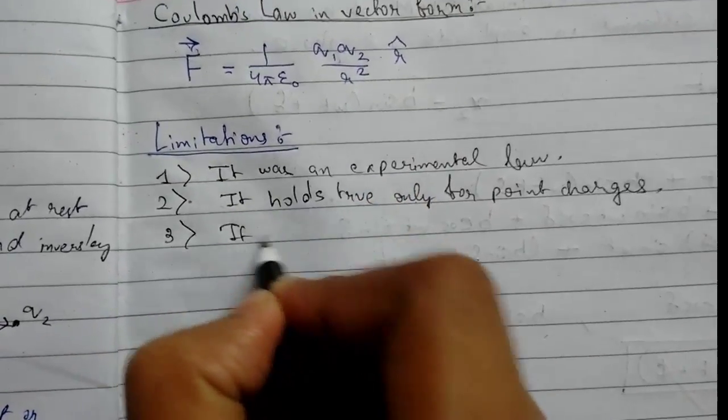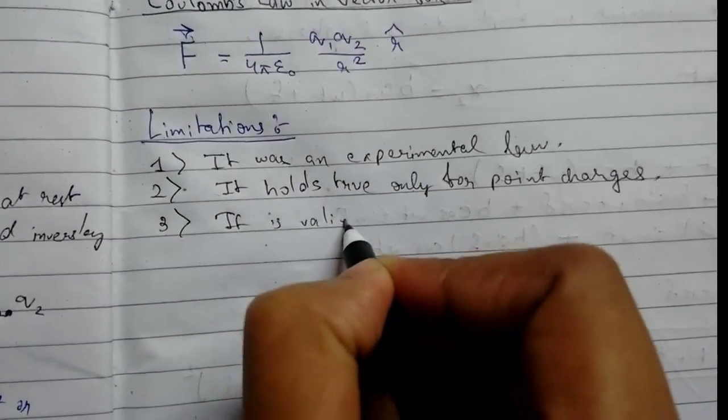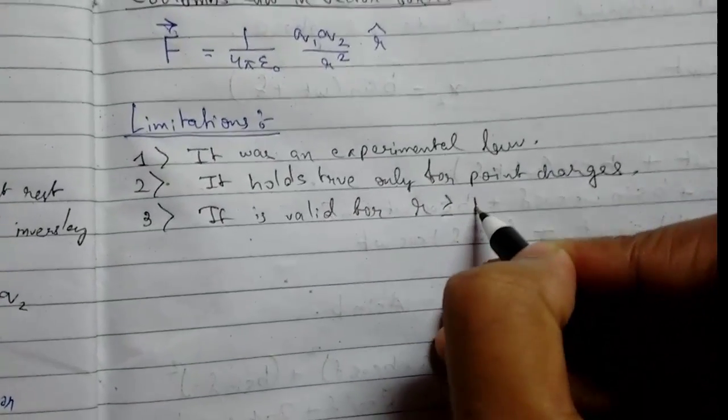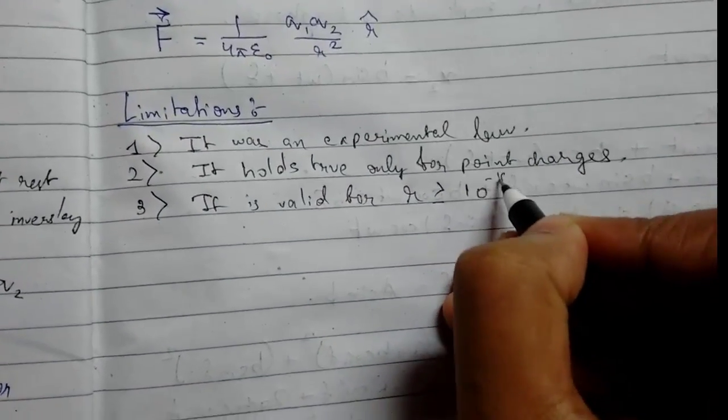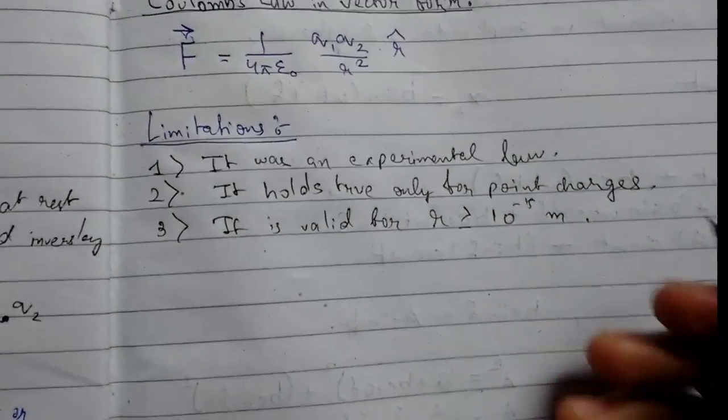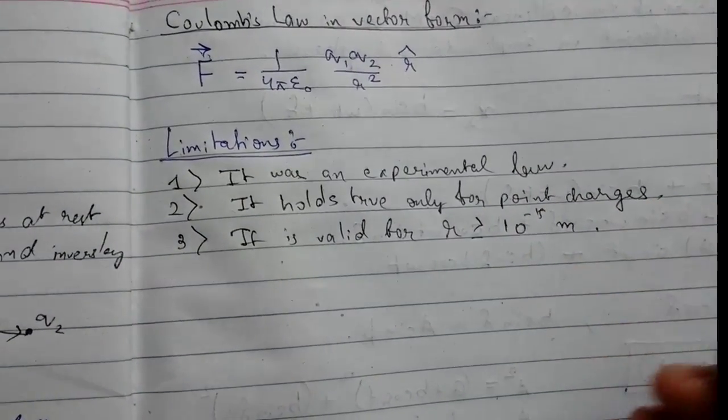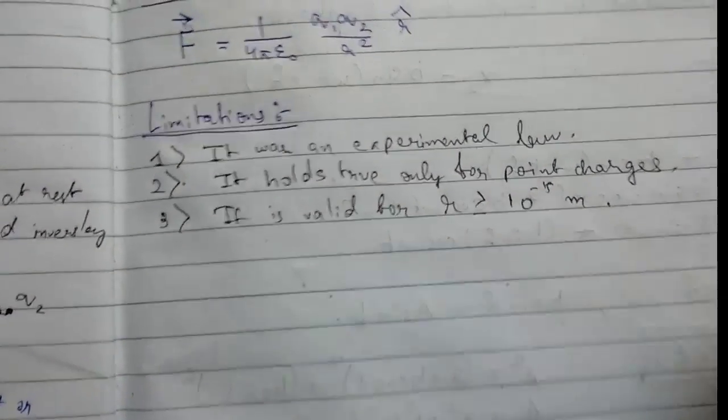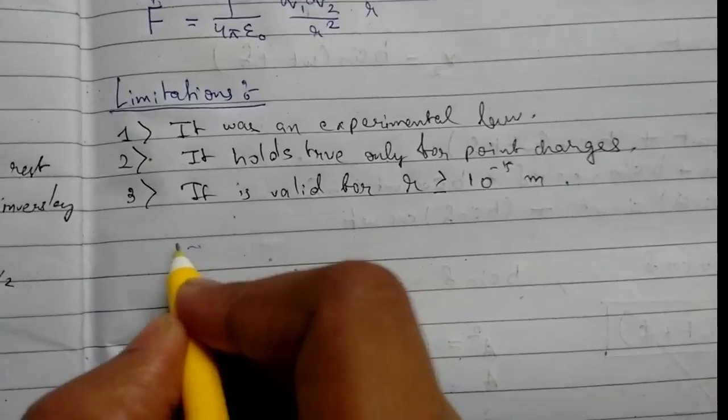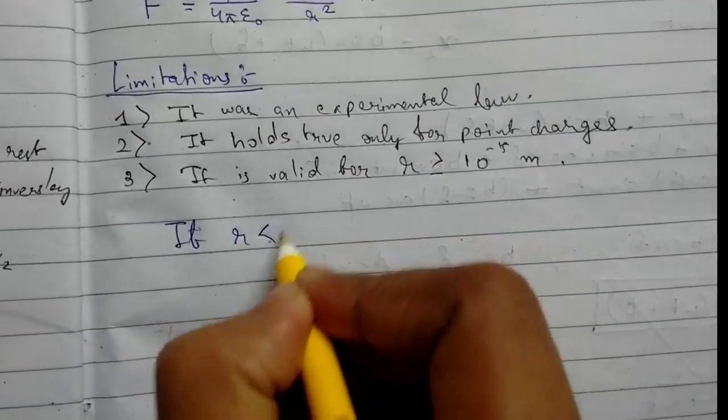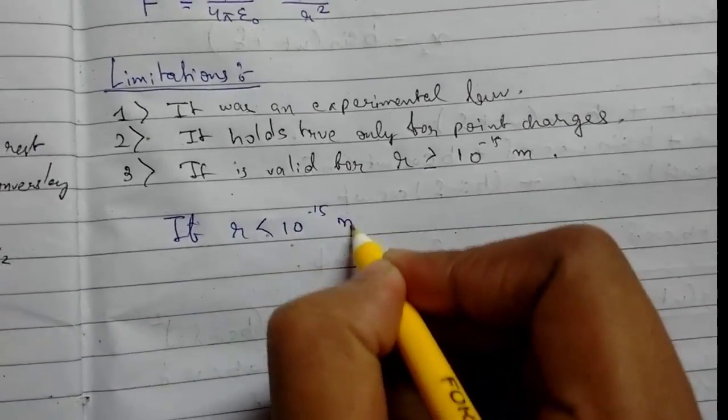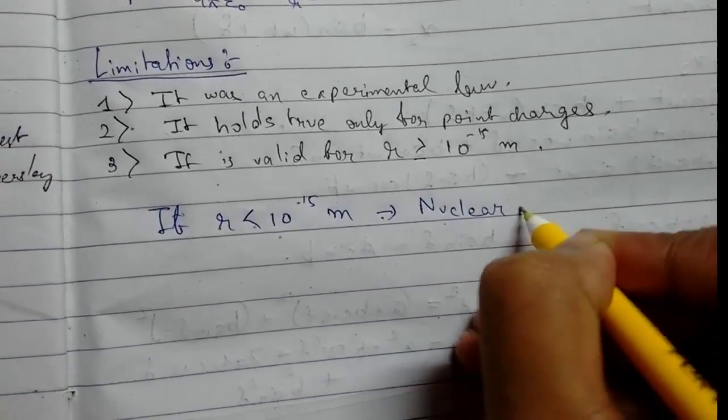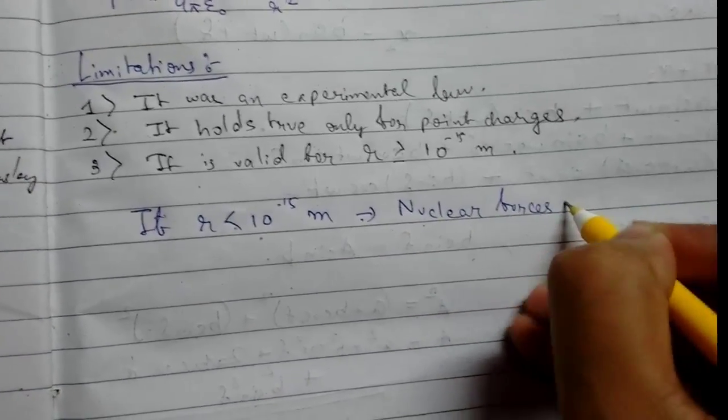Number three: it is valid when the distance between objects must be greater than 10^-15 meters. These were the three limitations. If R is less than 10^-15 meters, then nuclear forces come into action.